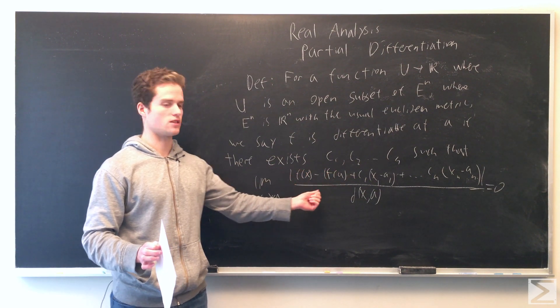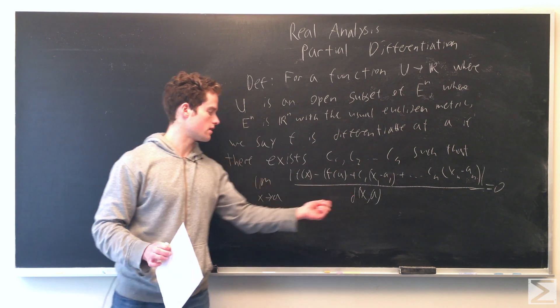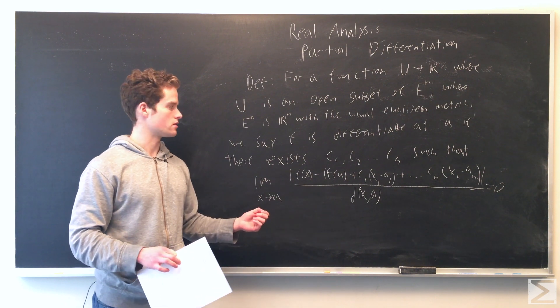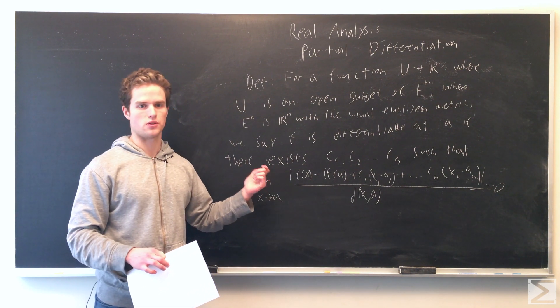over the distance between x and a (Euclidean distance), the limit of this as x approaches a equals zero. Then we say f is differentiable at a.